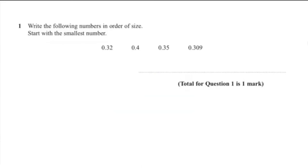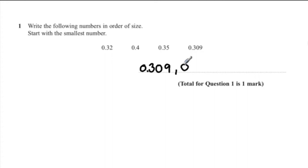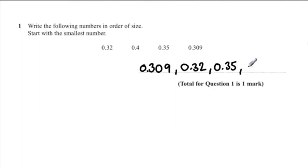Question 1: write the following numbers in order of size, start with the smallest number. The smallest number is 0.309, the second smallest is 0.32, the next one is 0.35, and the biggest number from the list is 0.4.